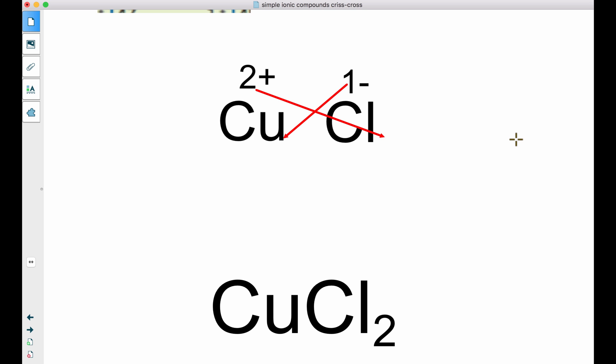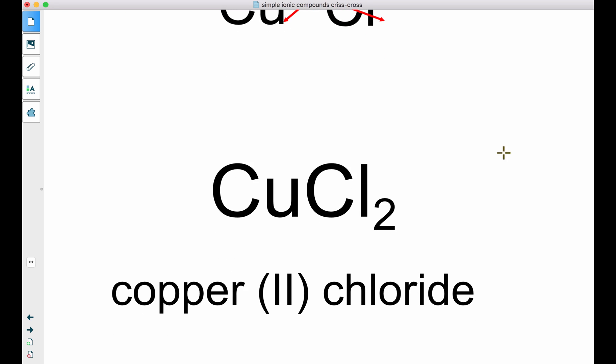Now, because we used copper with a 2+, when we go to name it, we will call it copper (II) chloride. So it's still ending with "-ide".